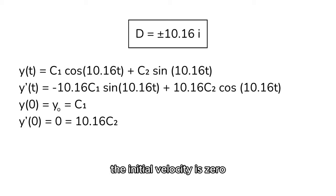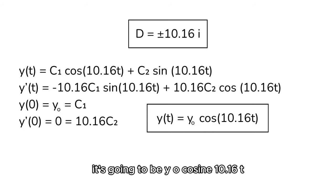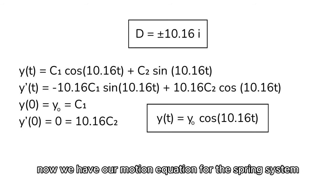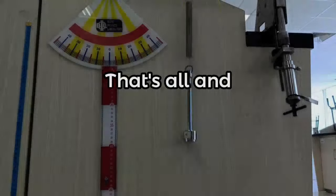Y prime of zero, the initial velocity, is zero. So, that's going to be 10.16c2. Okay, so that tells us that c2 is zero. Overall, the position of the spring is actually just a cosine function. It's going to be y0 cosine 10.16t. Alright, now we have our motion equation for this spring system.